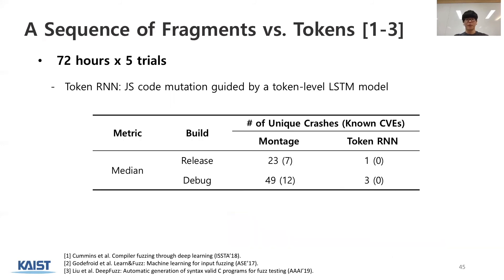We compared two different representations of JS code, modeling JS code as a sequence of fragments and a sequence of tokens. Token RNN means mutating JS code by leveraging an LSTM model trained on JS code tokens. As you can see, Montage found much more bugs compared to token RNN. Actually, only 0.58% of the JS tests generated by token RNN were executed without errors.